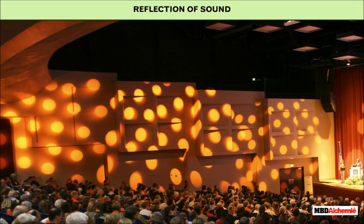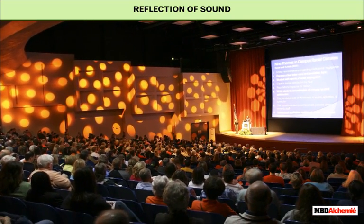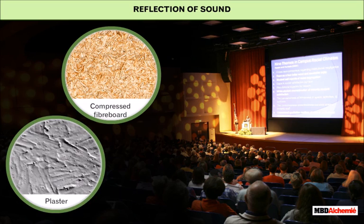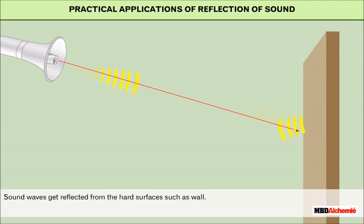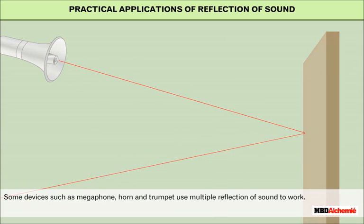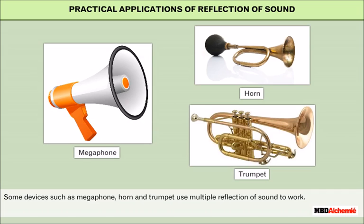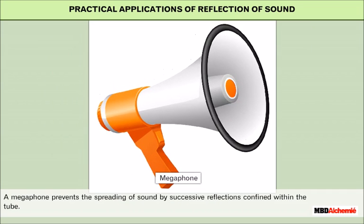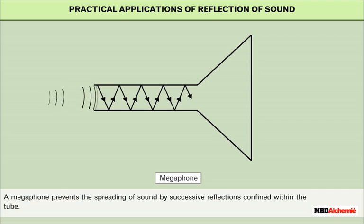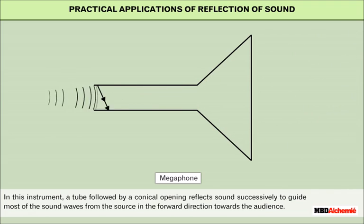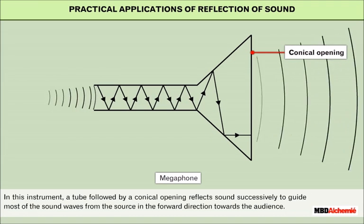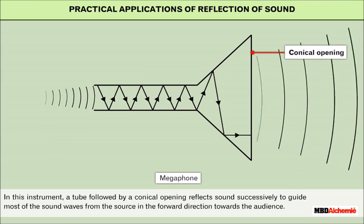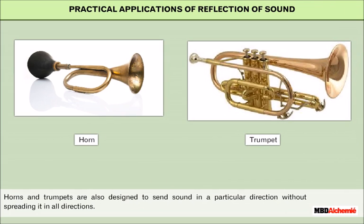In order to reduce reverberations, the ceiling and walls are laid with sound-absorbing materials such as compressed fiberboard, plaster, or curtains. Sound waves get reflected from hard surfaces such as walls. Some devices such as megaphone, horn, and trumpet use multiple reflection of sound to work. A megaphone prevents the spreading of sound by successive reflections confined within the tube. A tube followed by a conical opening reflects sound successively to guide most of the sound waves from the source in the forward direction towards the audience. Horns and trumpets are also designed to send sound in a particular direction without spreading it in all directions.